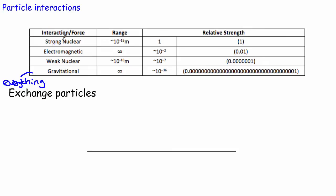This interaction works with any particles whatsoever. We also know quite a lot about the electromagnetic interaction — anything that's charged, so anything that has a positive or negative charge, feels this electromagnetic interaction. If you're a neutral particle like a neutron, you don't feel it. If you've got something positive and something negative, the interaction is an attractive one; if both are positive, the interaction is a repulsive one. Virtually all of the forces we see around us — like friction — can be described by this electromagnetic interaction.